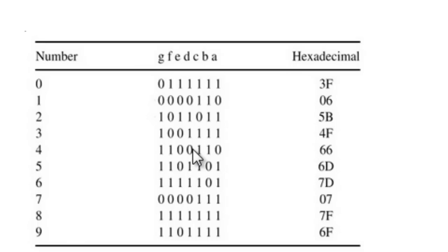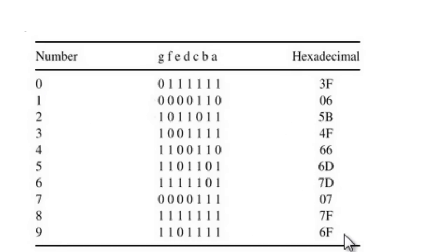The corresponding number can be in decimal, hexadecimal, or binary — it's up to you. This simple lookup table is used to display digits from zero to nine in a common cathode configuration.